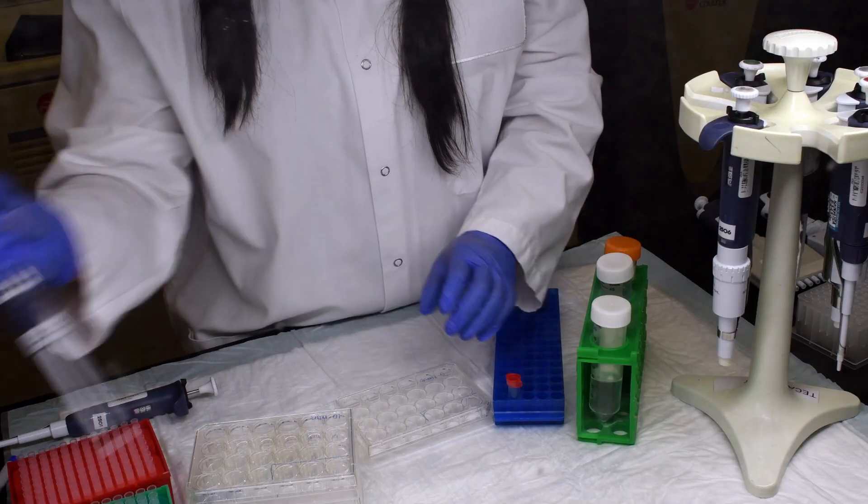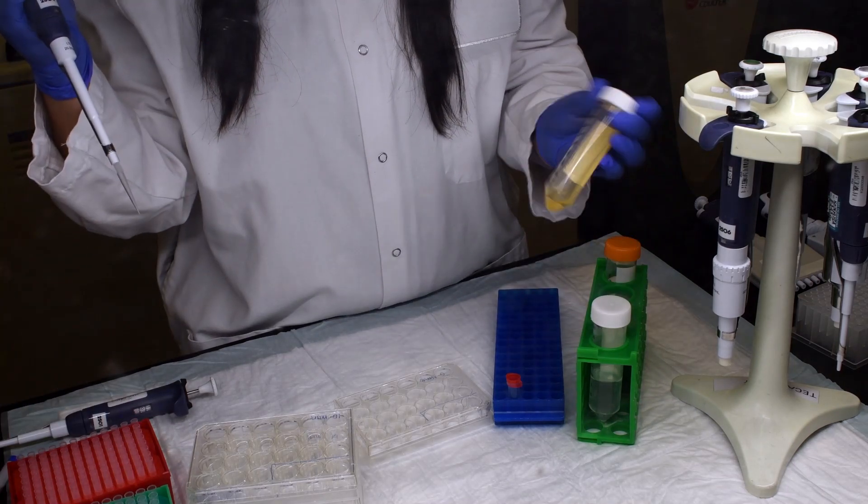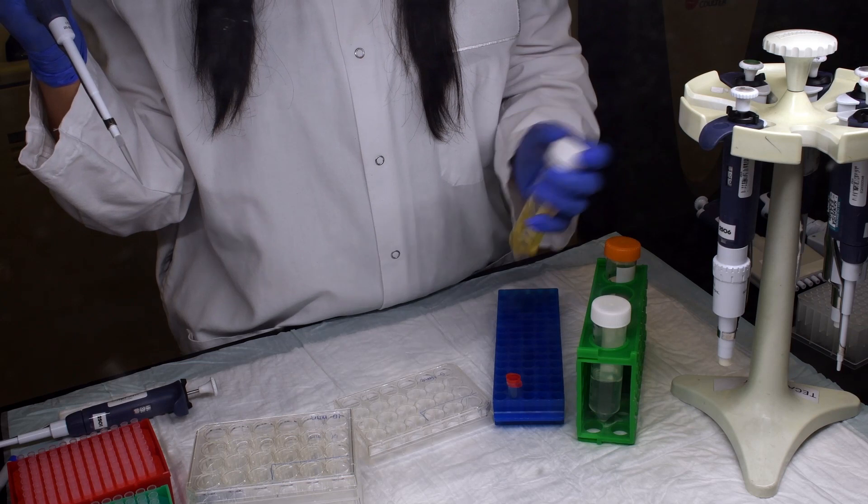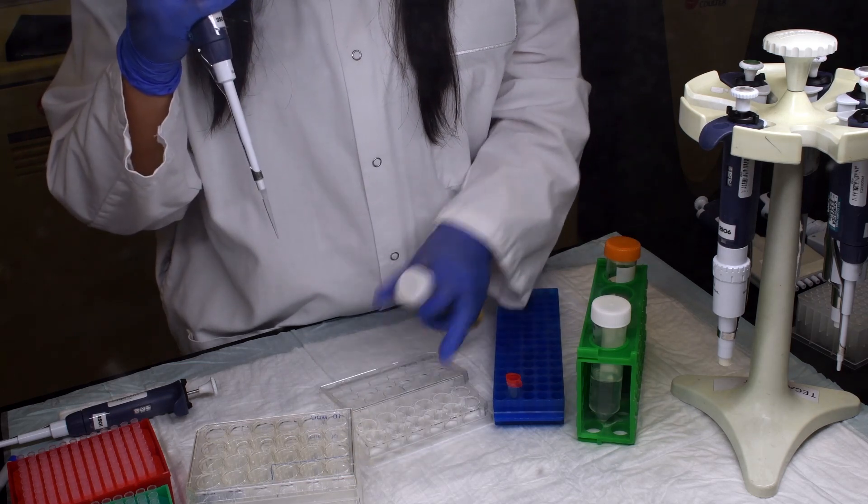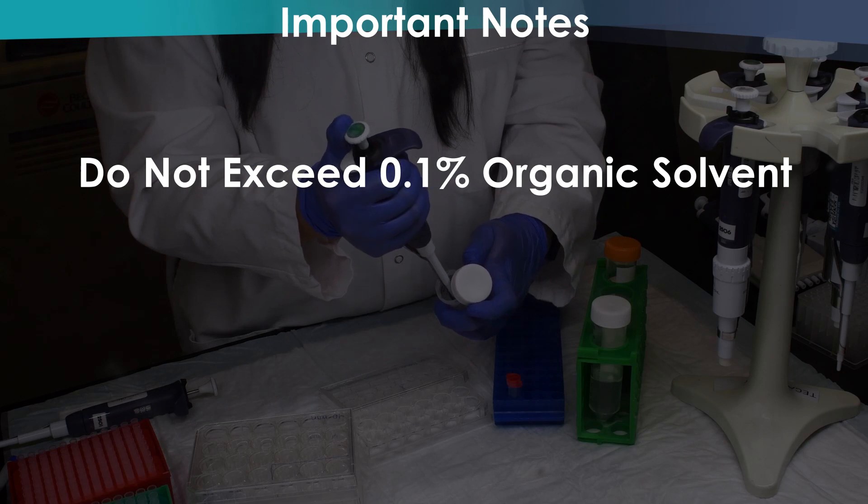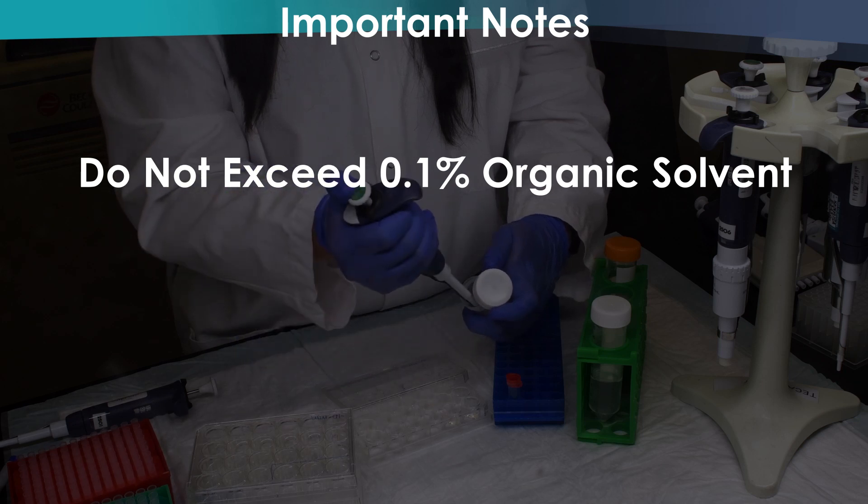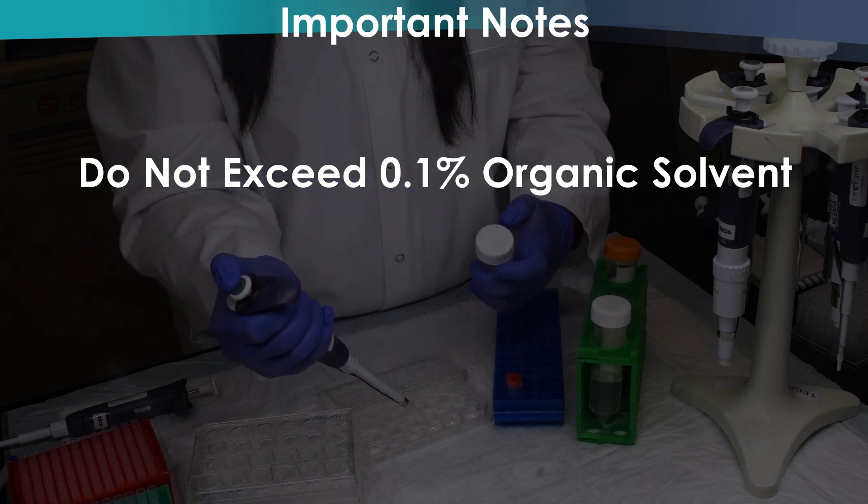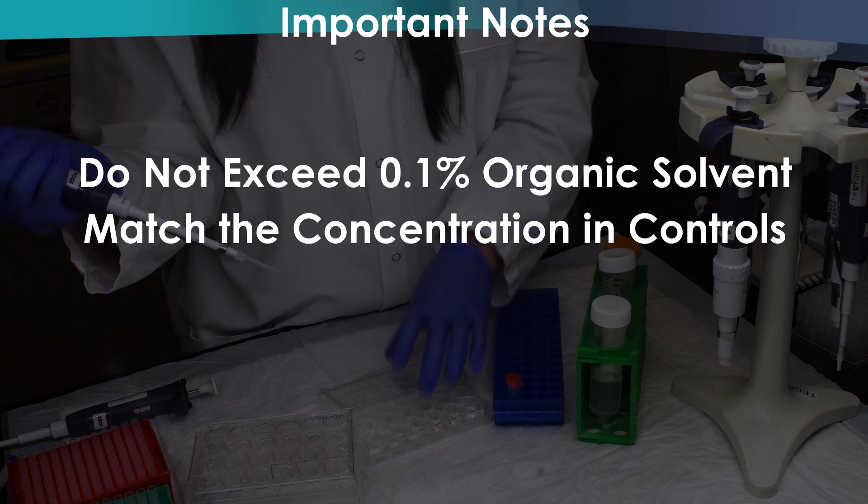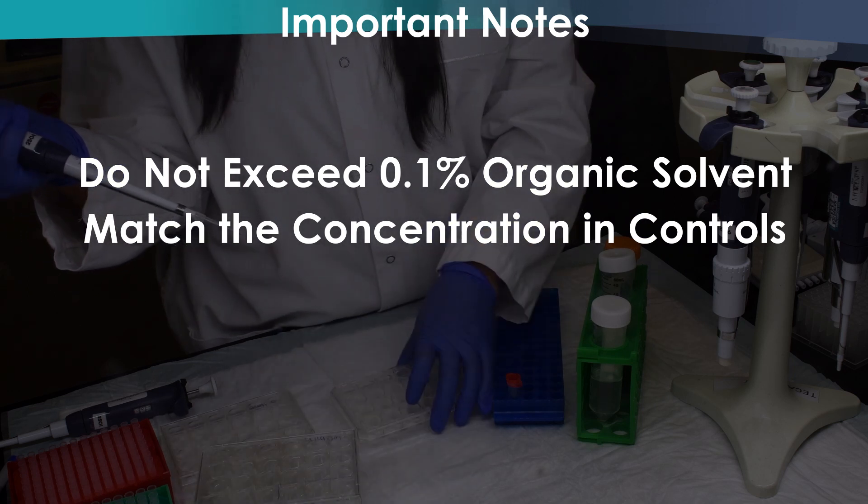Next, prepare incubation medium containing the test articles. When making the test articles stock, you will need to take care to make them in a way that when added to the incubation, the organic solvent does not exceed 0.1% of the final incubation volume. Sometimes this is unavoidable due to solubility challenges of the test article, but if you cannot stay under 0.1%, be sure to use the same concentration in your vehicle control wells to account for any potential interference from the organic solvent.